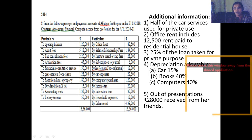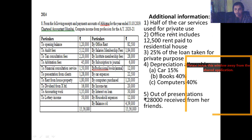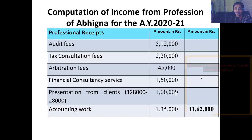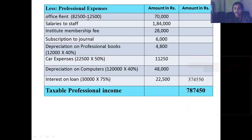Office rent is used for the residential house, so it is not a professional expense. The loan is for private use. Depreciation has to be charged: car at 15%, books at 40%, computers at 40%. If you observe, office rent is used for the residential house, so it is disallowed.